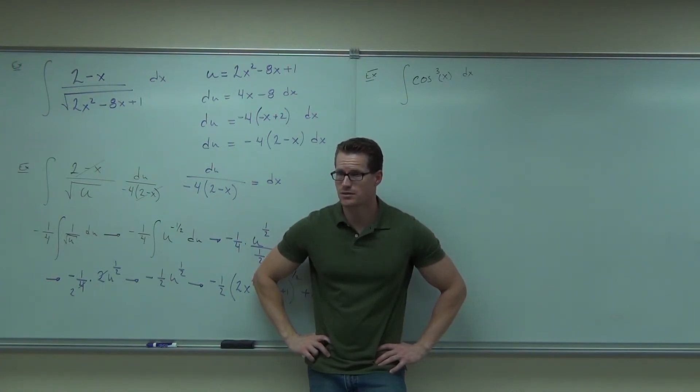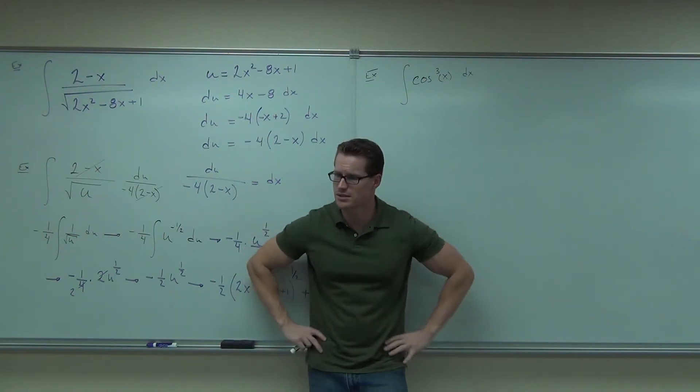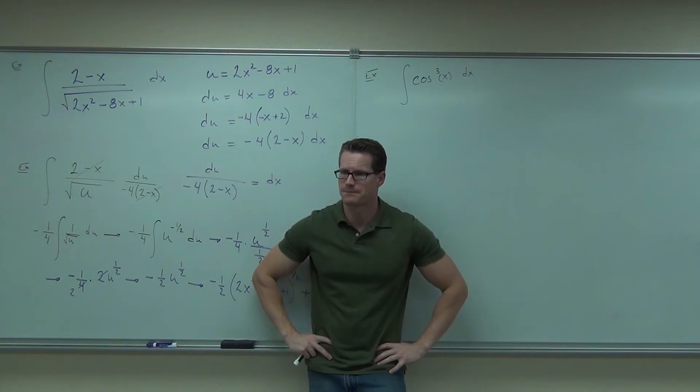We could try some things. You could try picking x. That's not really going to help, right? It just changes cosine cubed of x to cosine cubed of u. That doesn't really do much. We could try picking cosine x, right? Because it's cosine x to the third power. But the derivative of cosine x is sine x. Is there sine x up there? Then that would be a problem.